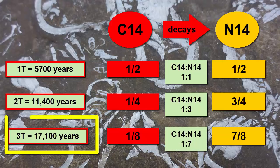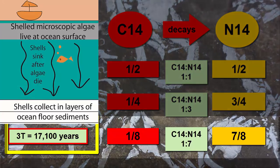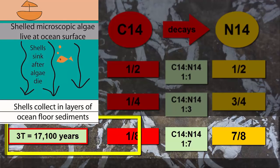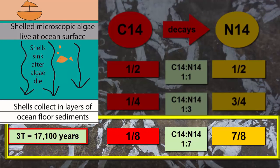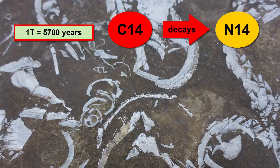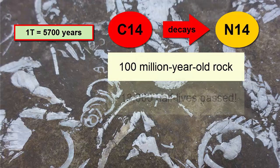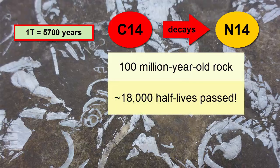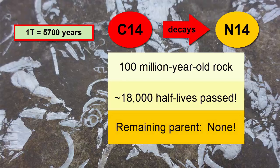At this point, three half-lives have passed, and the time is 5,700 times 3, or 17,100 years. A shell that was buried 17,100 years ago would have a carbon-14 to nitrogen-14 ratio of 1 to 7. If we are trying to use the carbon-14/nitrogen-14 radioactive decay pair to date a rock that's 100 million years old, there likely will not be enough parent left to measure, and that would not be a good choice.